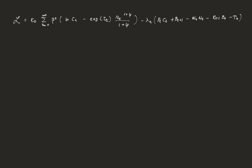So I've rewritten the Lagrangian here. The first order condition with respect to C_T: we have E_0 times beta^T. Notice we have ln(C_T), so the derivative with respect to C_T is 1/C_T. Then we have a C_T term in the constraint associated with P_T, giving us minus lambda_T * P_T. That is our first order condition for consumption.